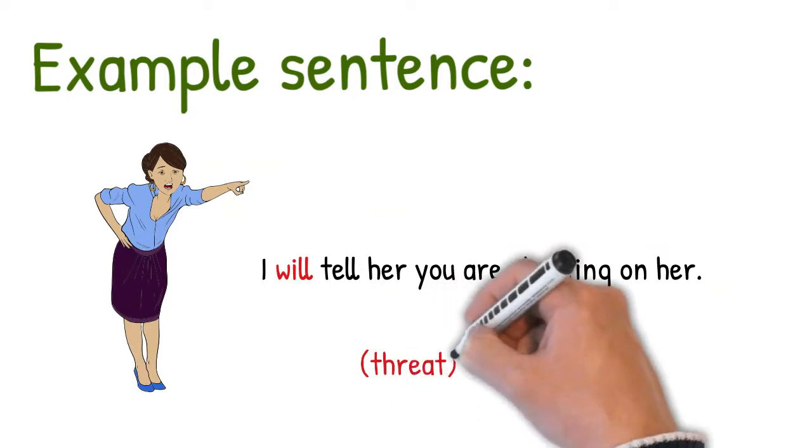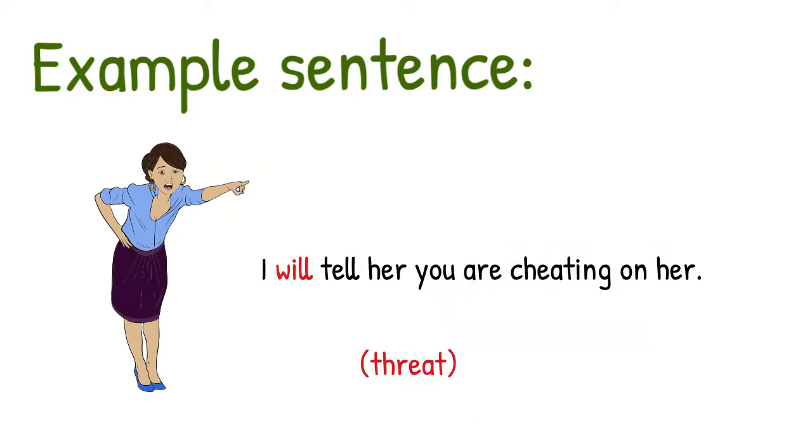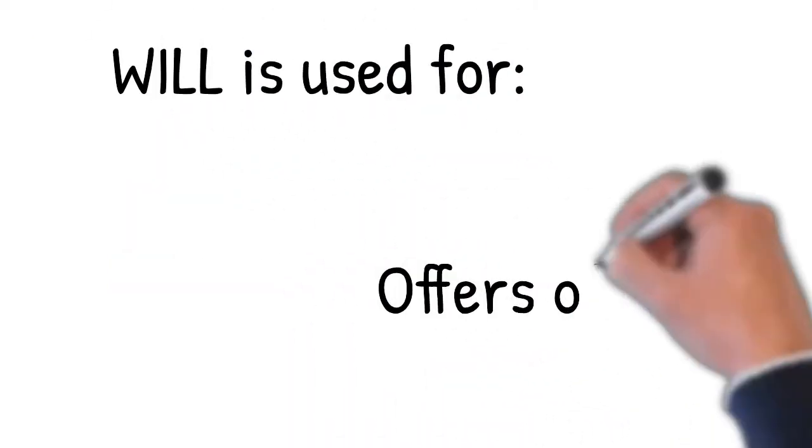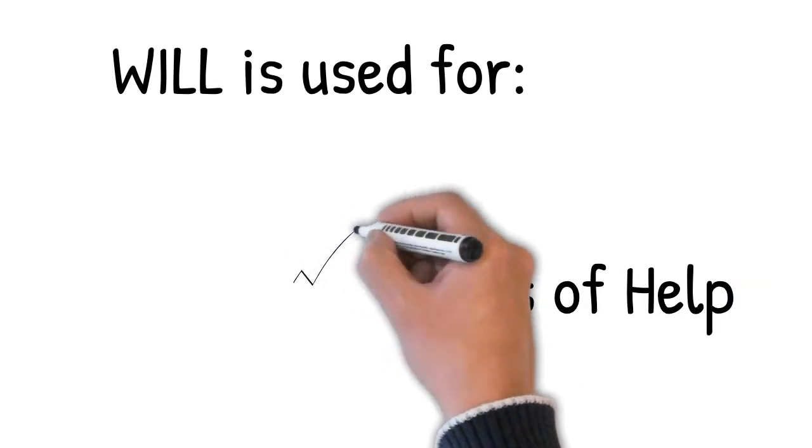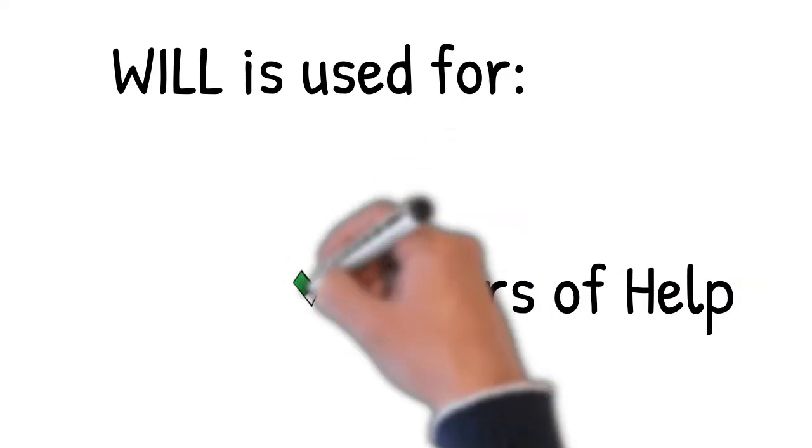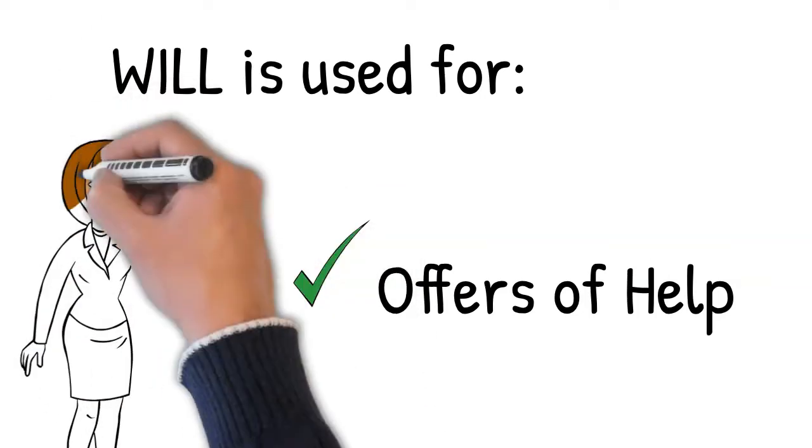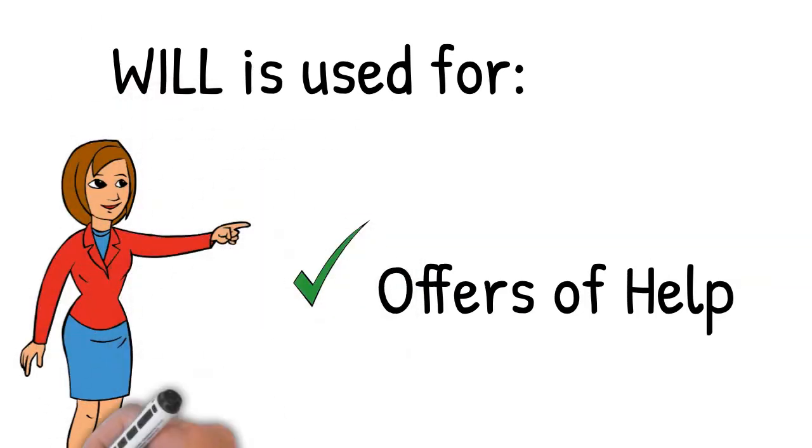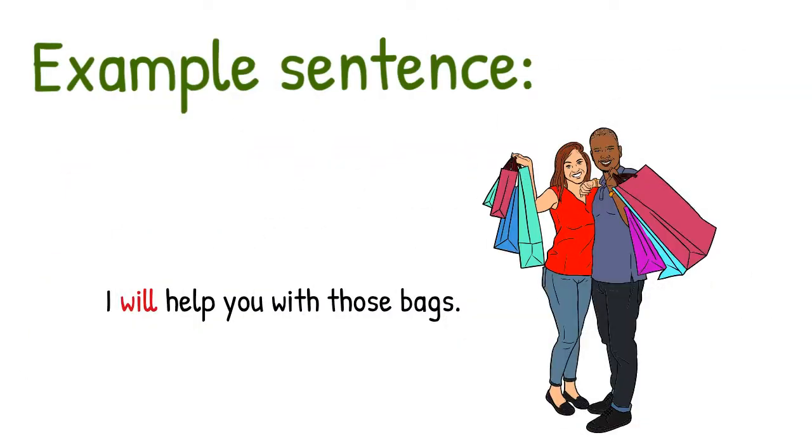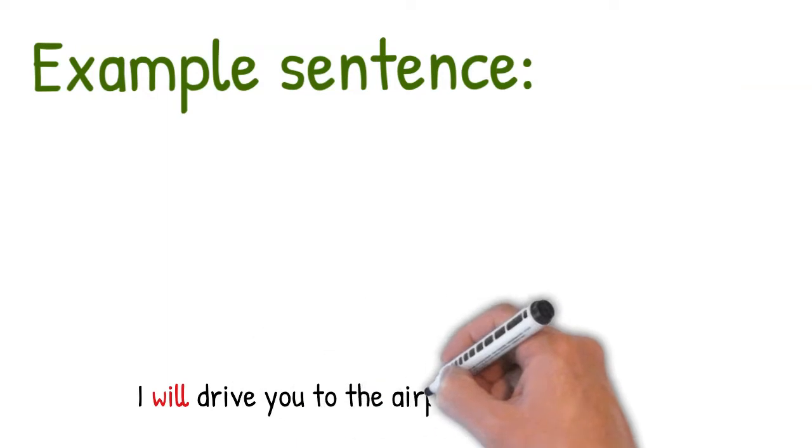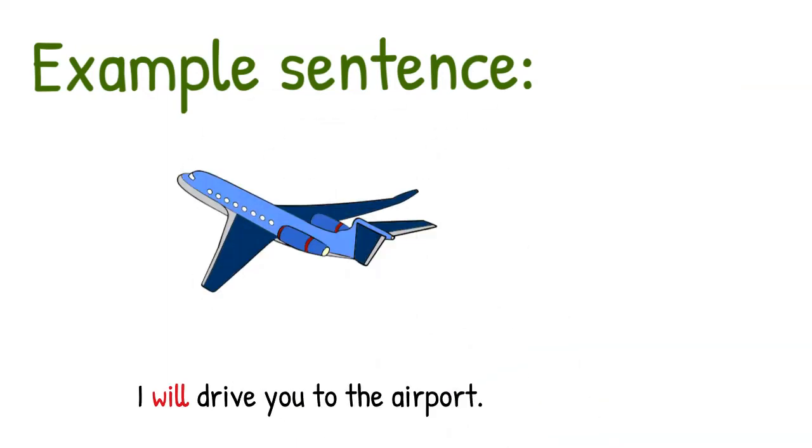Here's another example sentence. I will tell her you're cheating on her. Will is also used for offers of help. This has something to do with the time of speaking decisions now, which you will see in the next example. But when you offer to help someone, you're making that decision right now to do it. Here's an example sentence. I'll help you with those bags. I'll drive you to the airport. That's an offer of help.